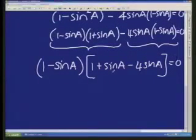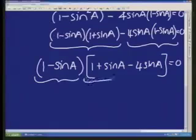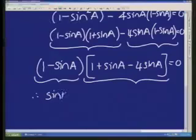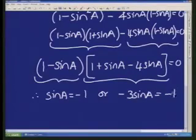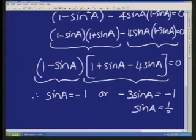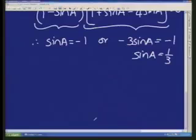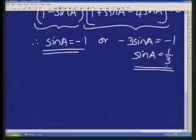Now we've got factors, two factors that multiply together give me 0. Therefore sine a must equal negative 1, or that would be 1 minus 3 sine a, so negative 3 sine a is equal to negative 1, and sine a will be equal to a third. So we've got two ratios: sine a equals negative 1, or sine a equals a third.